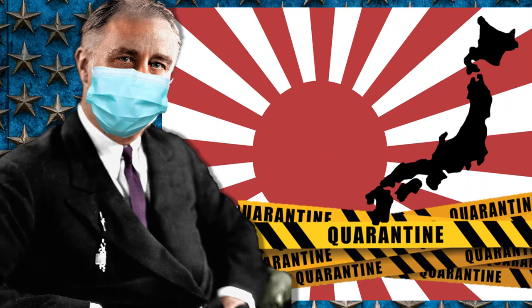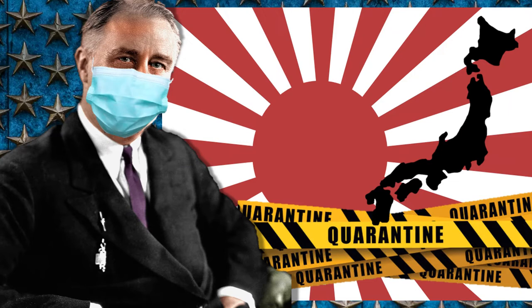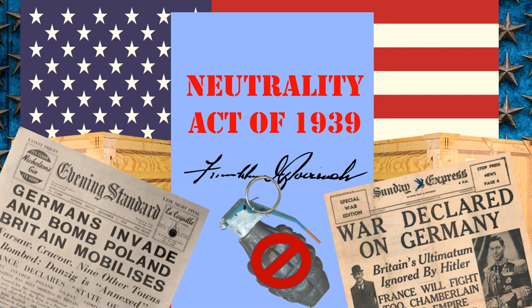In October 1937, Roosevelt tested American opinion by denouncing Japan in his famous Quarantine Speech. According to him, peaceful nations must band together to quarantine aggressive nations, suggesting perhaps imposing economic sanctions. However, public opinion was still divided on this issue.